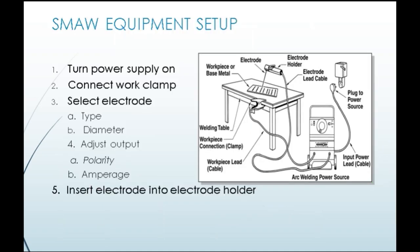Next, let's see the SMAW equipment setup. To set up the welding machine: 1. Turn power supply on. 2. Connect work clamp. 3. Select electrode based on type and diameter. Then adjust output based on polarity and amperage. Finally, insert electrode into electrode holder and initiate welding.